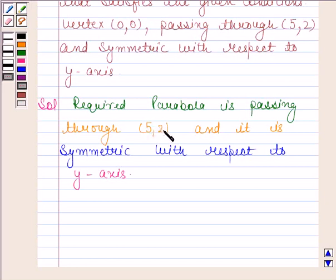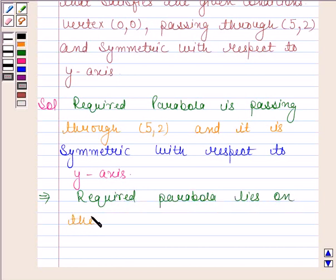Now the point (5,2) lies in the first quadrant and it is given to us that the parabola is symmetric with respect to y-axis. So this implies that the required parabola lies on the positive side of y-axis.